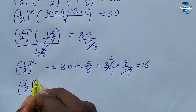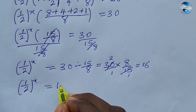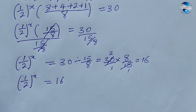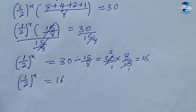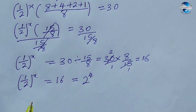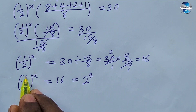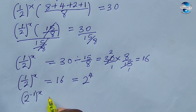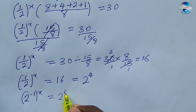Now we can express 16 in base 2. 16 is the same as 2^4. So we rewrite the left-hand side: 1/2 is the same as 2^(−1), so we have (2^(−1))^x = 2^4.